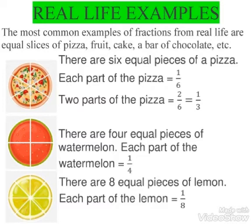In the second figure, there is a watermelon with 4 equal pieces. Each part of the watermelon is 1 upon 4. In the third figure, there are 8 equal pieces of lemon, and each part of the lemon is 1 upon 8.